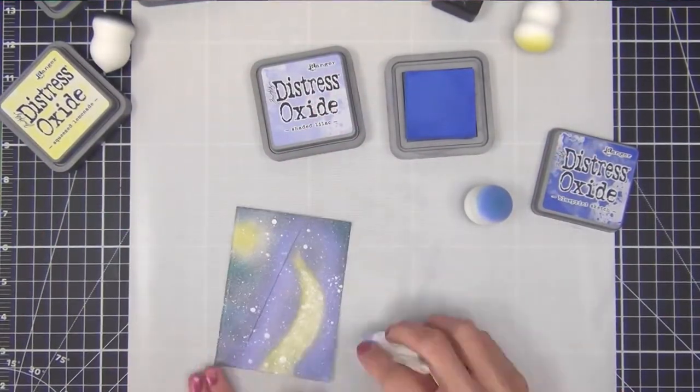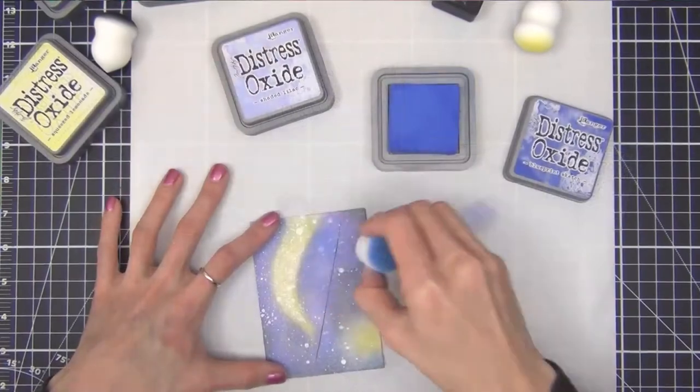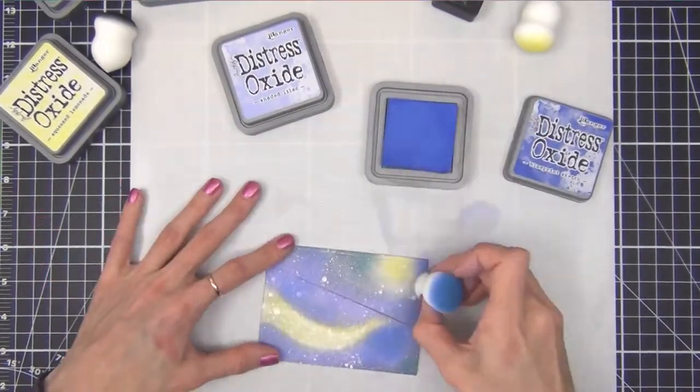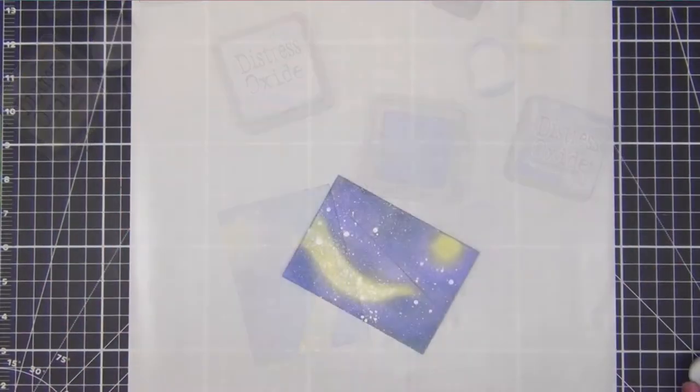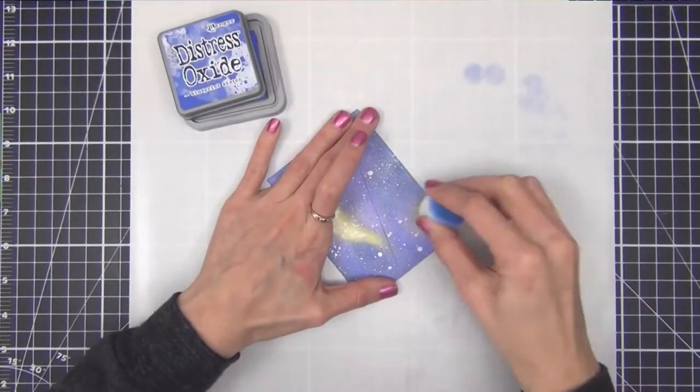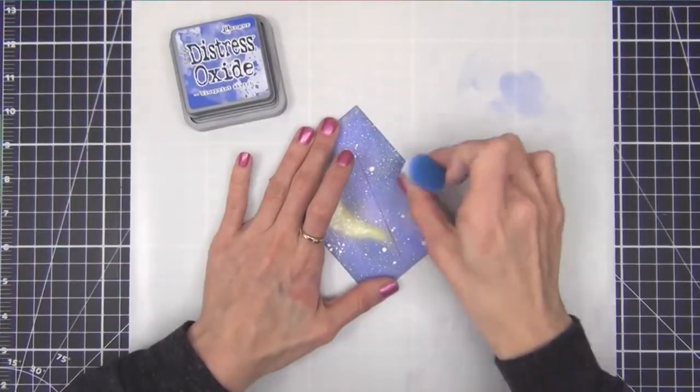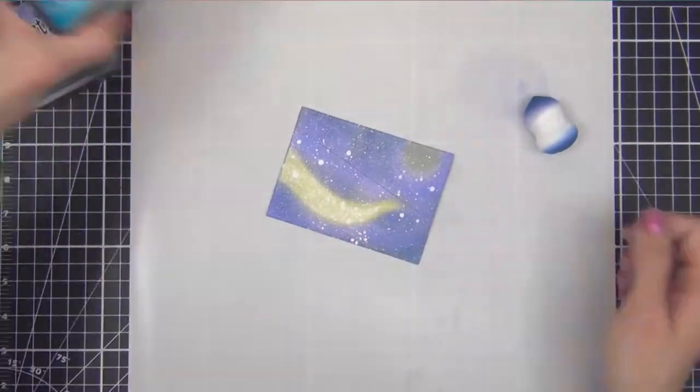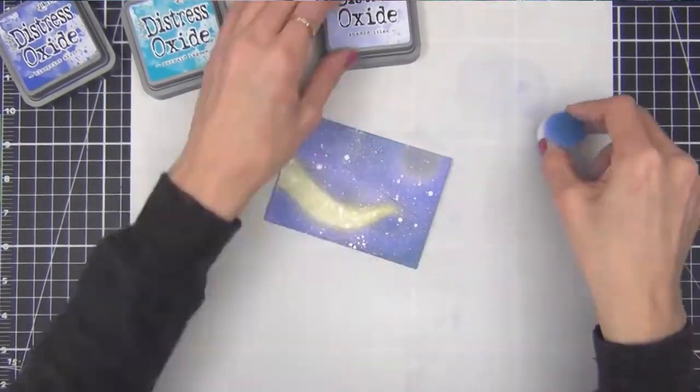And after I added the black I realized I didn't love how thick the star trail was with yellow. So I just went in with some of the shaded lilac and covered it up. And as you can see it worked really well. I got it into a much better shape.